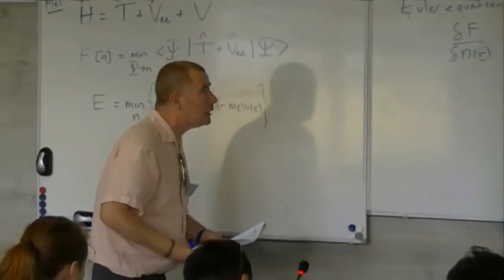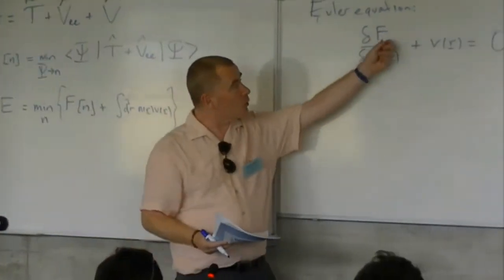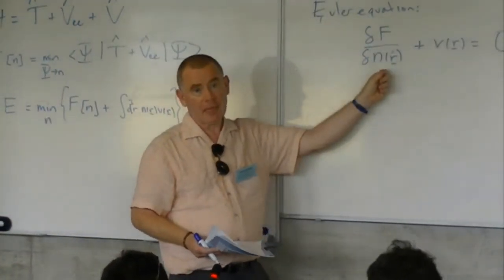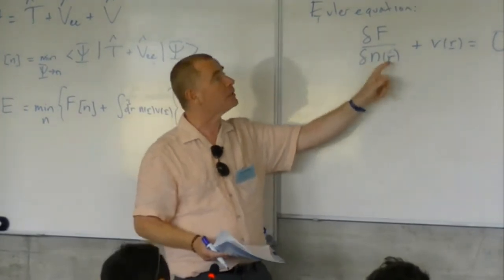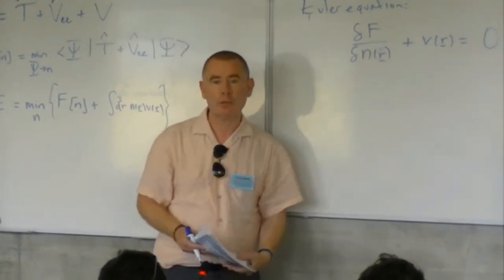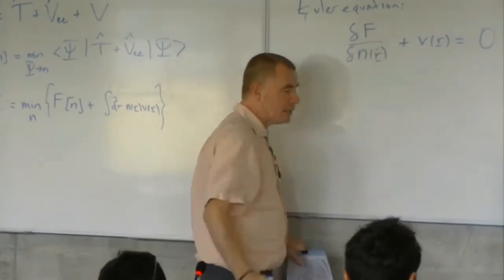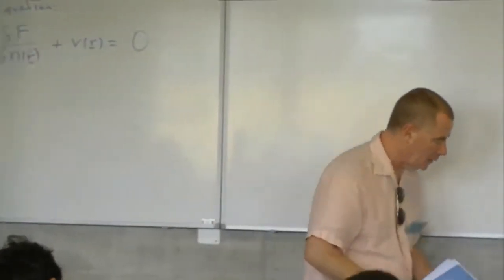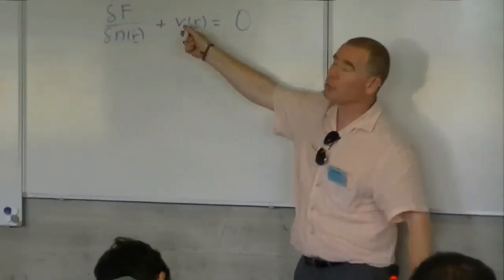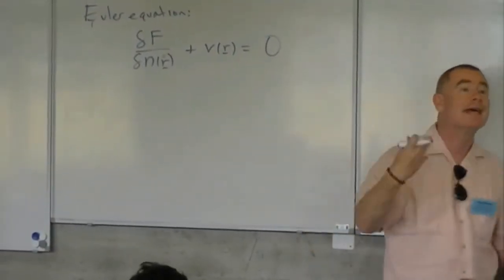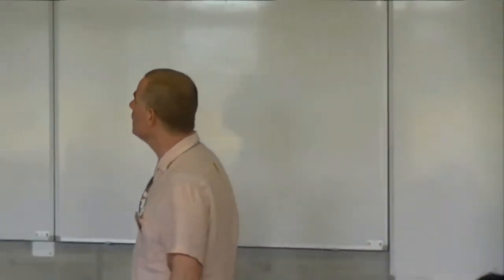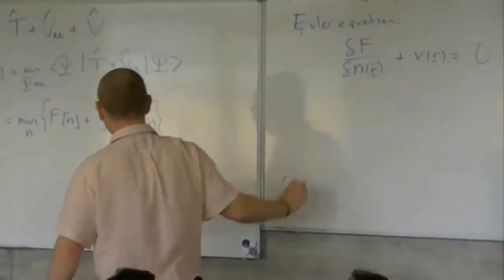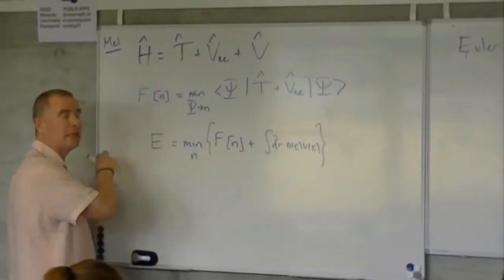And that is how you find F. In the old Thomas-Fermi theory, they write down an approximation for F, and then they solve this equation. So this is going to be a functional of the density. And only if you have the exact F, only the exact ground state density will satisfy this equation — so you put in different densities and only one will give you exactly the potential that you started with. And that's how you find it. Then you go backwards, take that solution and feed it in here to get the ground state energy.